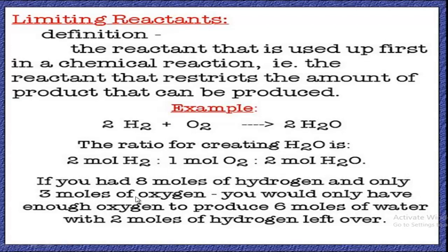Which one will be the limiting reactant? The ratio of hydrogen to oxygen to form water is 2:1, meaning the amount of hydrogen is double the amount of oxygen. Here the amount of oxygen is 3 moles, so the needed amount of hydrogen would be 6 moles, but 8 moles is given. So the amount of hydrogen is more than needed; oxygen is in lesser amount, so oxygen is the limiting reactant here.